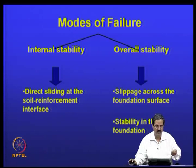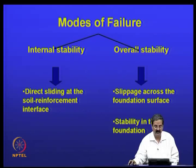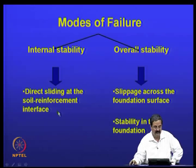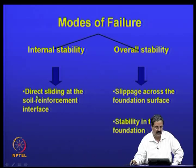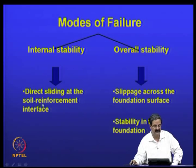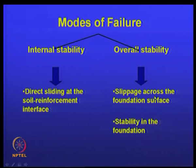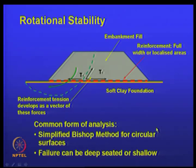There are three mechanisms to address using established geotechnical methods: rotational stability, lateral sliding, and bearing capacity. Internal stability is important — the reinforcement should not lead to failure. The embankment tries to slide, and if the reinforcement has good interface resistance, it can prevent that. Overall stability involves slippage across the foundation, and stability in the foundation itself is another issue.